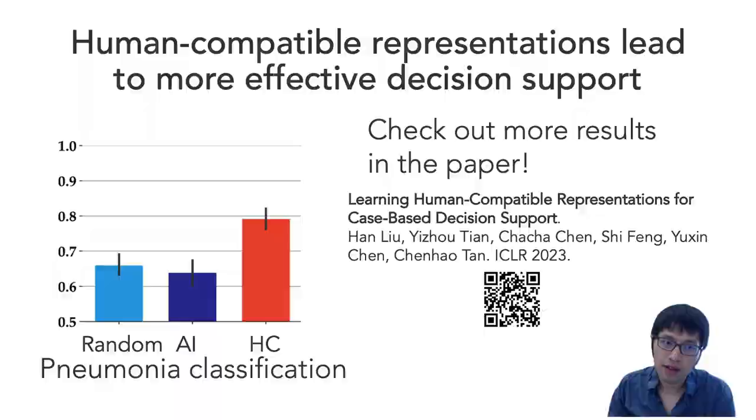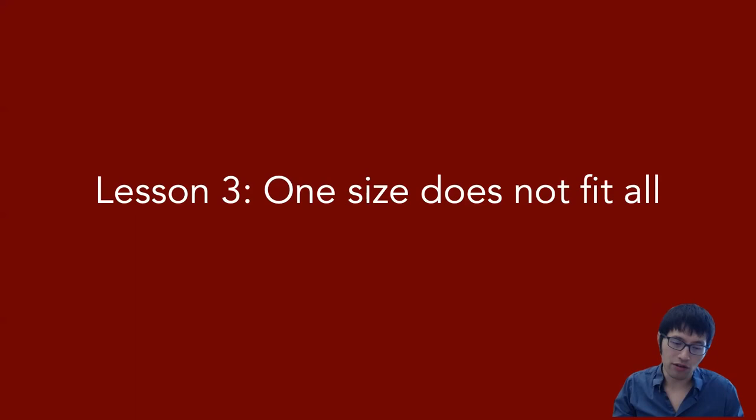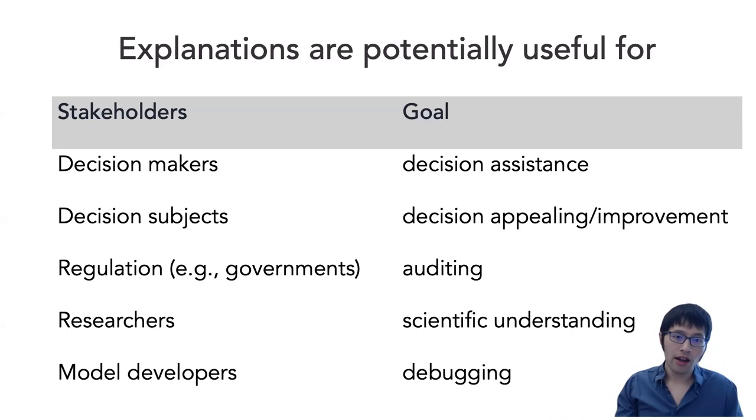The final lesson I would like to highlight is one size doesn't fit all. This is a natural corollary from the previous two lessons. Explanations are potentially useful for many things. So far we have been focusing on the use case where we have decision makers and we are thinking about the best way to provide decision support to help decision makers achieve better accuracy. Decision makers can be a doctor in the context of medical diagnosis, a judge in criminal justice, a loan officer in the context of loan application, or a hiring manager in the context of job application. But it can also be used for many different other cases. For instance, decision subjects would be the flip side of the decision maker. In loan application, it would be the applicant. It can also be useful to help auditing and can help researchers develop a better scientific understanding of the model and help model developers debug the model.